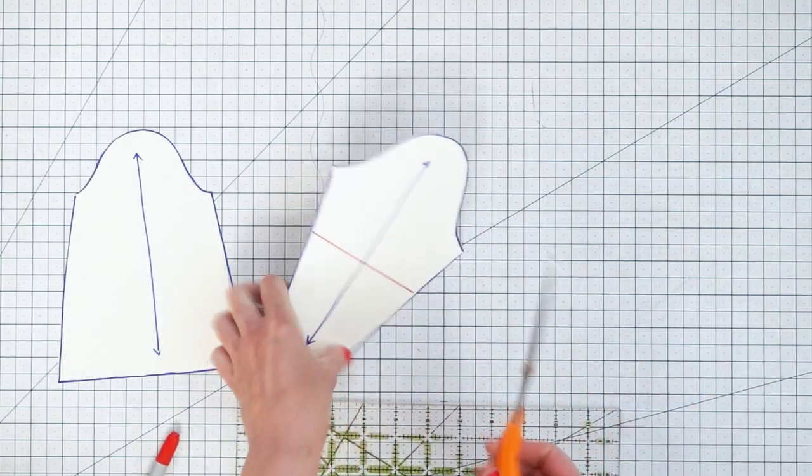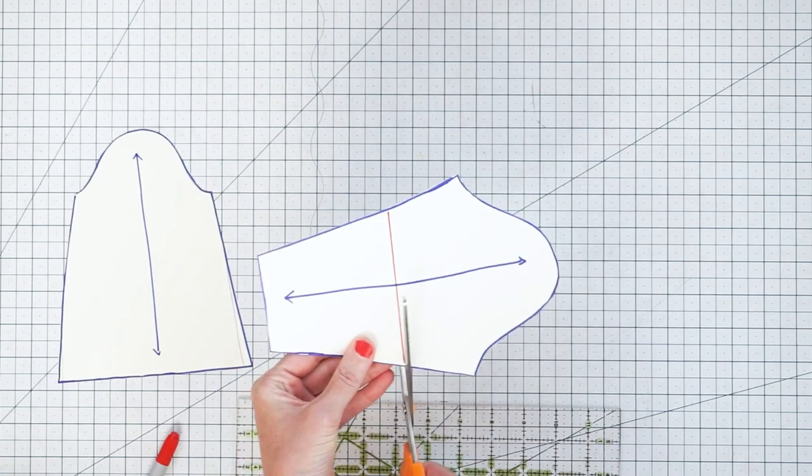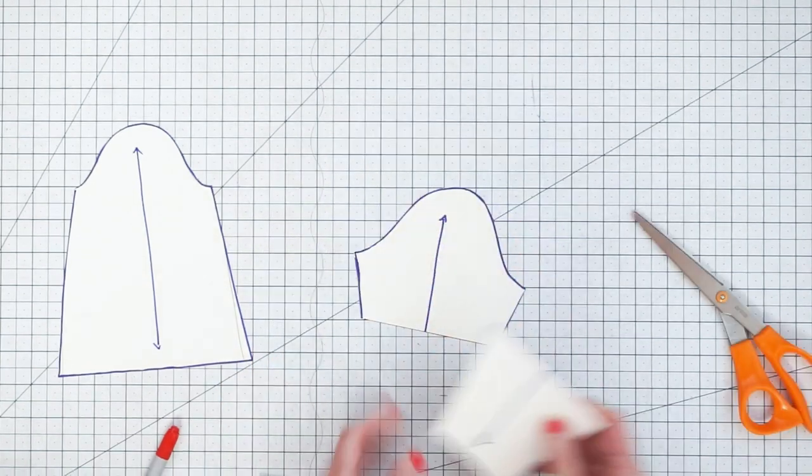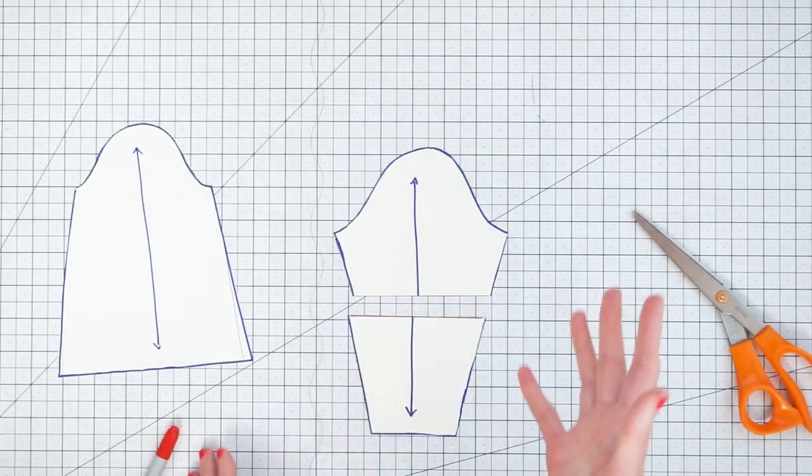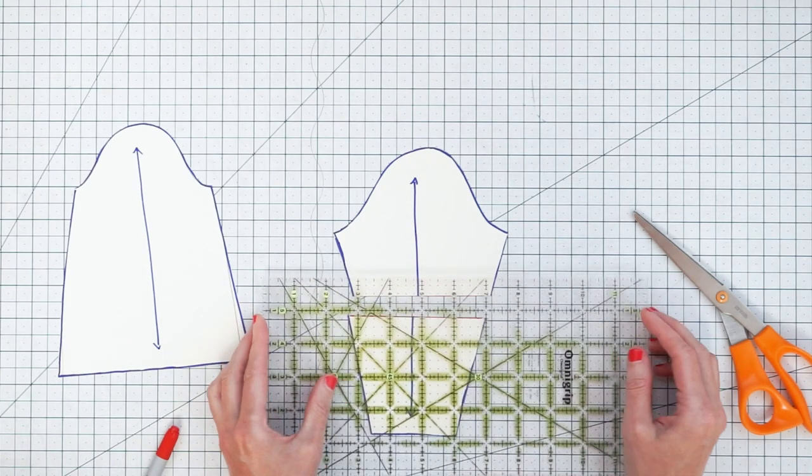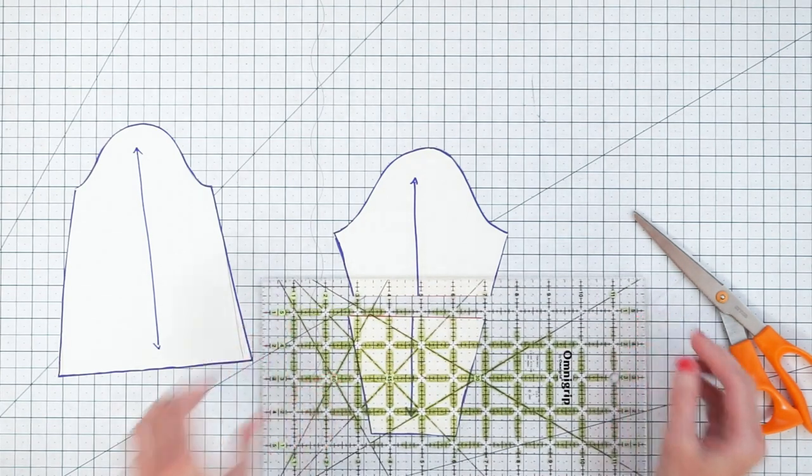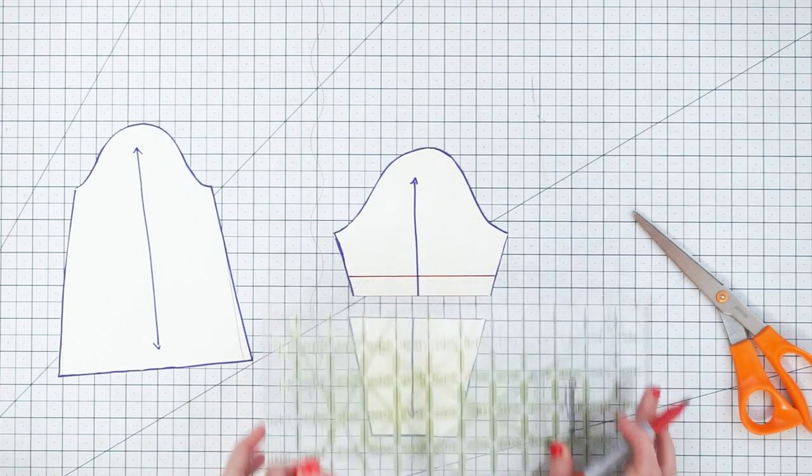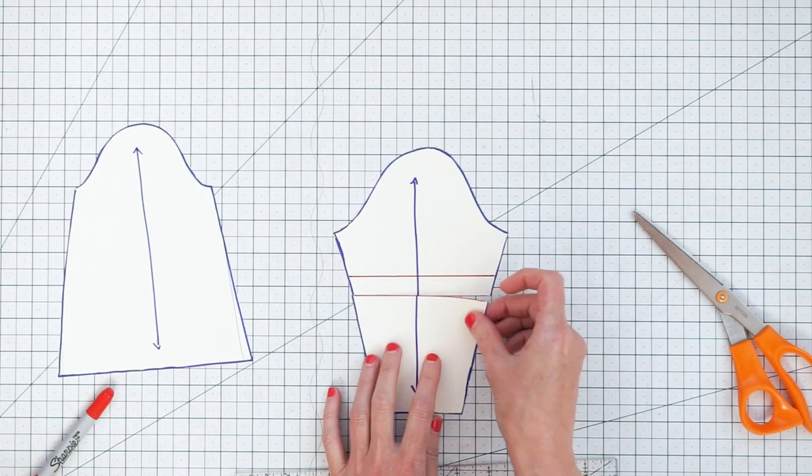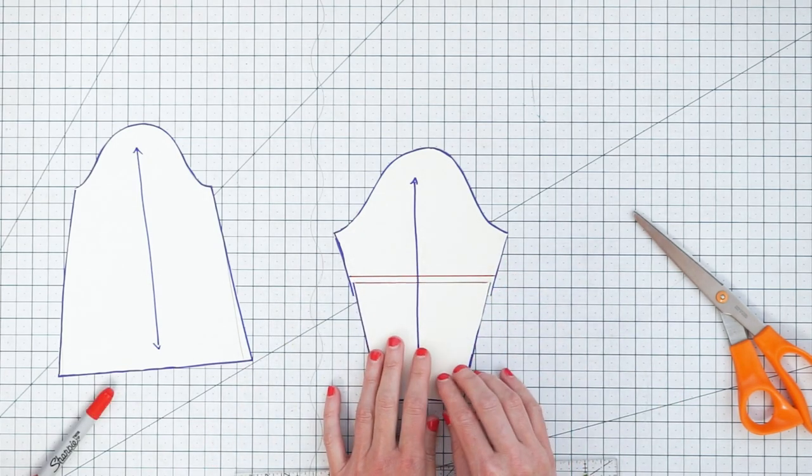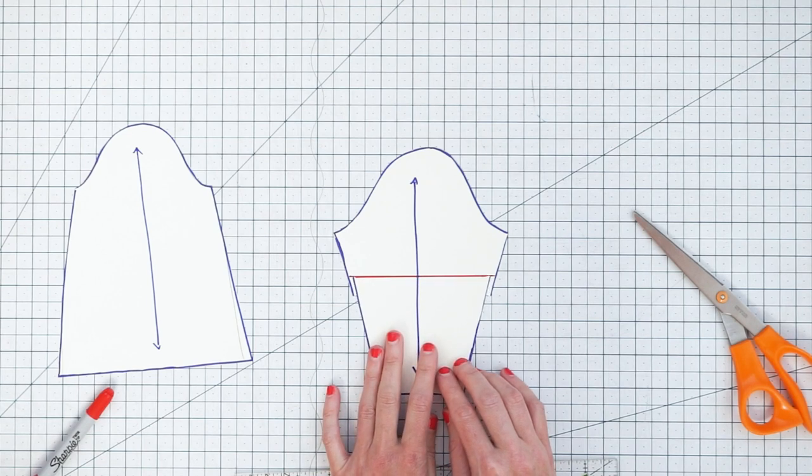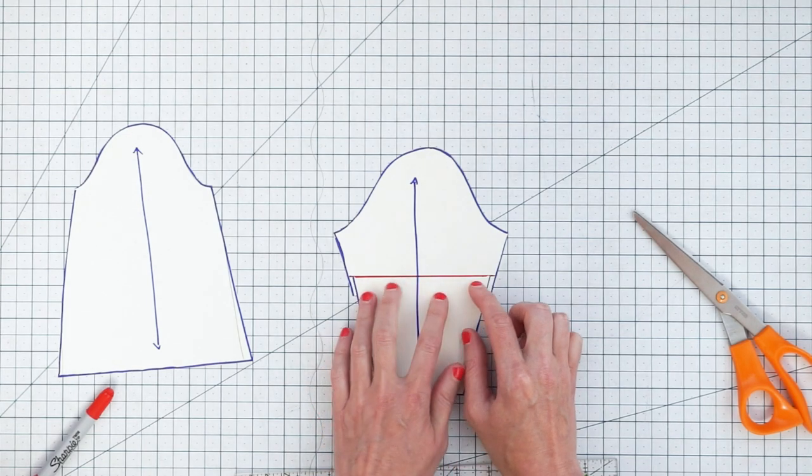Then we're going to take our scissors and cut along that line. Now if you want to shorten your pattern you take your measurement that you want it to be shorter and then you can draw another line right up here as a little guide. You want to make sure that you keep the grain lines really even and bring this pattern straight up to our guideline.